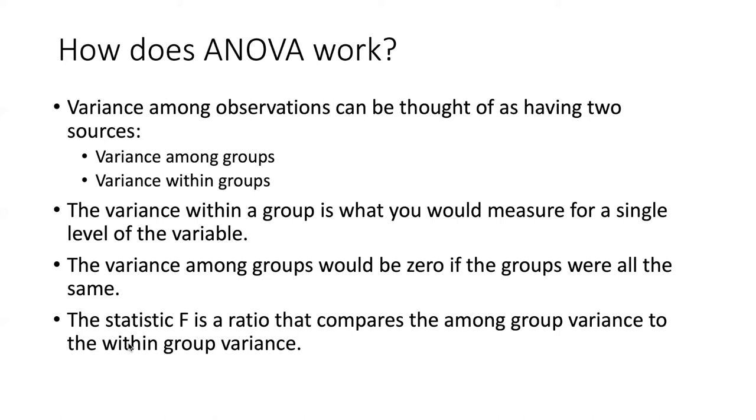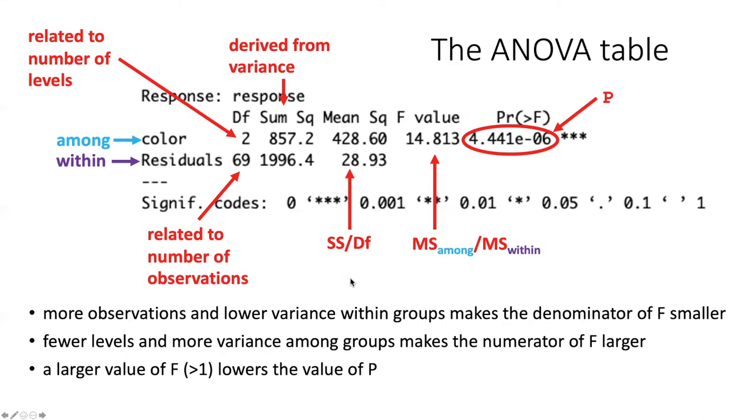The ANOVA uses a statistic that is called F, and the F statistic is a ratio that compares the among group variance to the within group variance. When you carry out an ANOVA, the result is this rather complicated sort of table, which we call an ANOVA table. So let's break this down and see how the ANOVA table tells us how to assess these differences that I just talked about.